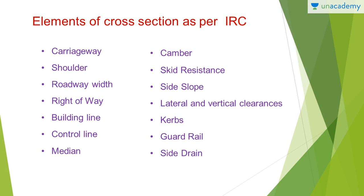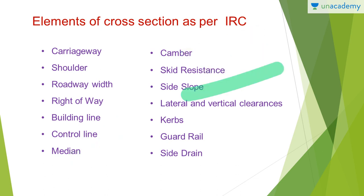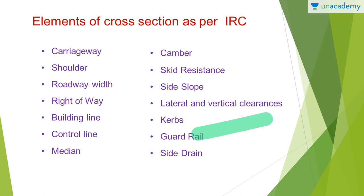First of all, let us have a look at the elements of cross section as per IRC. We have carriageway, shoulder, roadway width, right of way, building line, control line, median, camber, skid resistance, side slope, lateral and vertical clearances, curbs, guard rails and side drains. These are basically the elements of cross section as suggested by IRC, that is Indian Roads Congress.